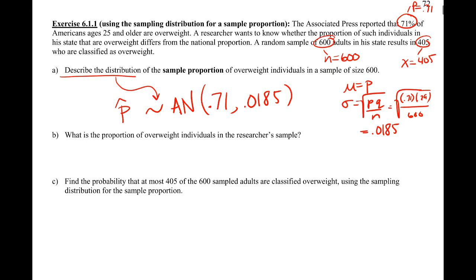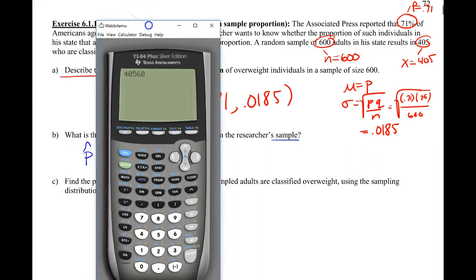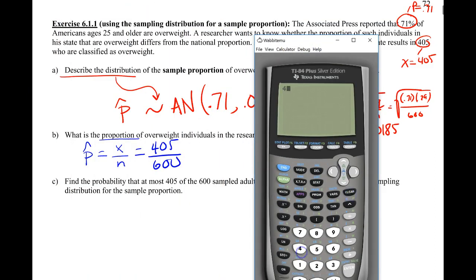Part B says, what is the proportion of overweight individuals in our sample? So we're being asked for the P-hat, proportion in the sample versus the real proportion. This is that calculation I told you is super simple, but it's not going to be given to you. You have to realize that if you want to find the proportion, you're just going to figure out the number of successes out of our total number. So this is our 405 divided by our 600. If we do that, 405 divided by 600, looks like we get 0.675.